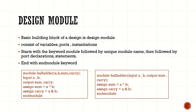The main building block of a design is its module. A design module consists of variables, ports, and instantiations. The module starts with the keyword 'module', where keywords are represented in italic form.